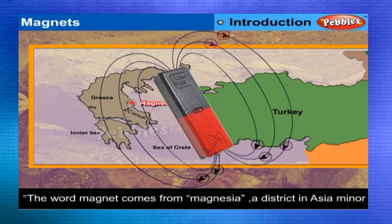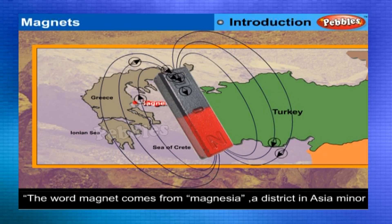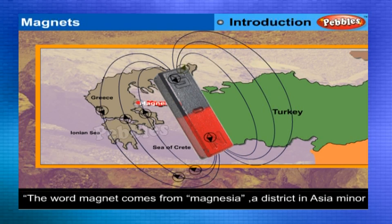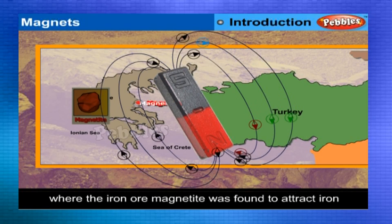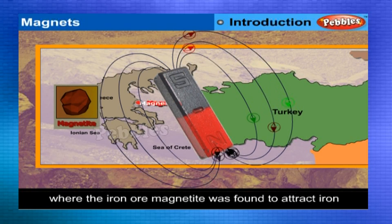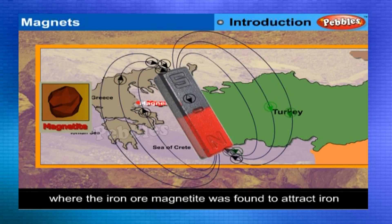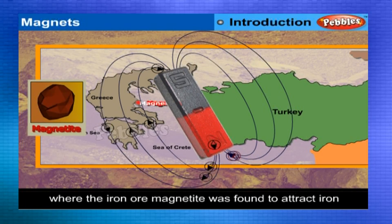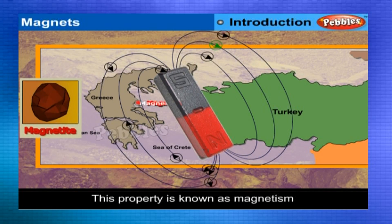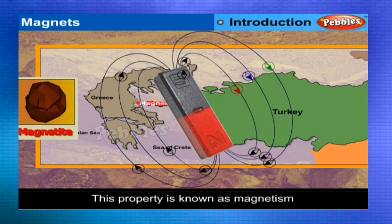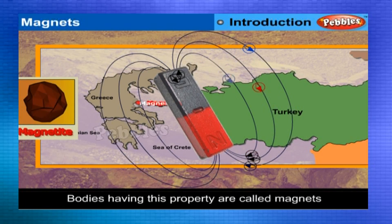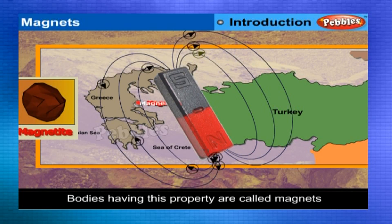The word magnet comes from Magnesia, a district in Asia Minor, where the iron ore magnetite was found to attract iron. This property is known as magnetism and bodies having this property are called magnets.